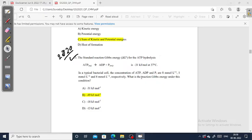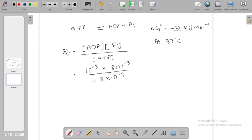For ATP, this is the same thing, 8 × 10^-3. We input the values and get Q equals 10^-3.